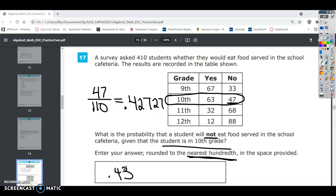It's 43%, but it says round to the nearest hundredth. So that is the probability that a student in the 10th grade will not eat food served in the school cafeteria.